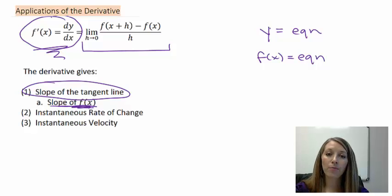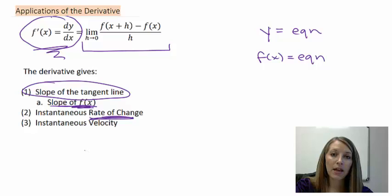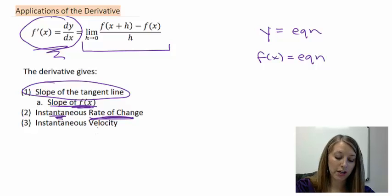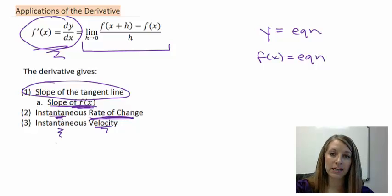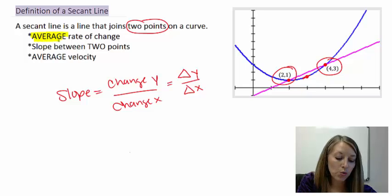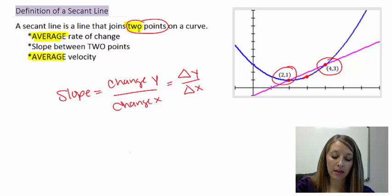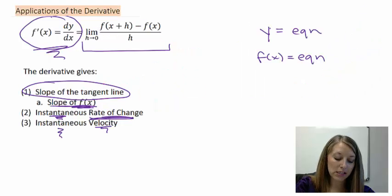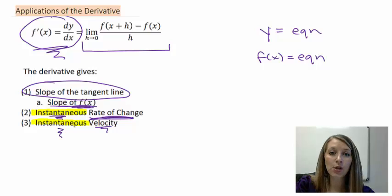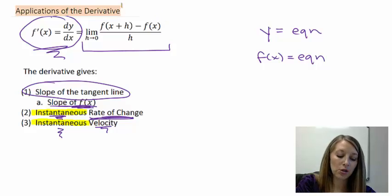Slope means different things in different applied problems. The slope of the secant line gives us the average rate of change, while the slope of the tangent line gives us the instantaneous rate of change. Another word for rate of change is velocity, and the tangent line gives us instantaneous velocity. On your homework: if asked for average rate of change or average velocity using two points, use the secant line slope formula from college algebra. If asked for instantaneous rate of change or instantaneous velocity, use the derivative.